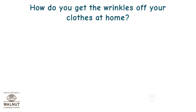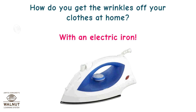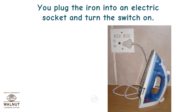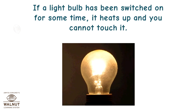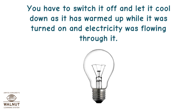How do you get the wrinkles out of your clothes at home? With an electric iron. You plug the iron into an electric socket and turn the switch on. Electricity starts flowing through the iron and the iron heats up. If a light bulb has been switched on for some time, it heats up and you cannot touch it. You have to switch it off and let it cool down, as it has warmed up while it was turned on and the electricity was flowing through it.